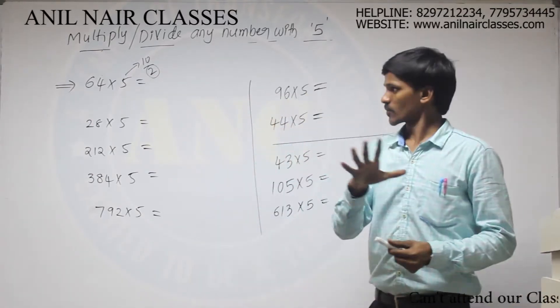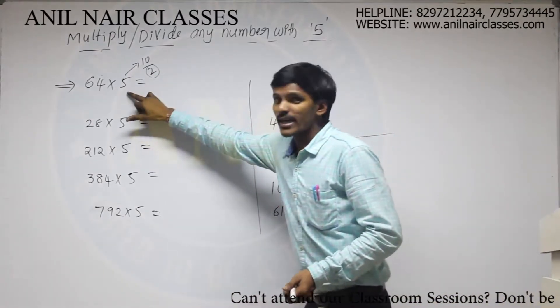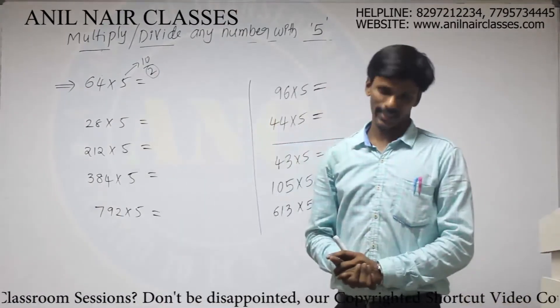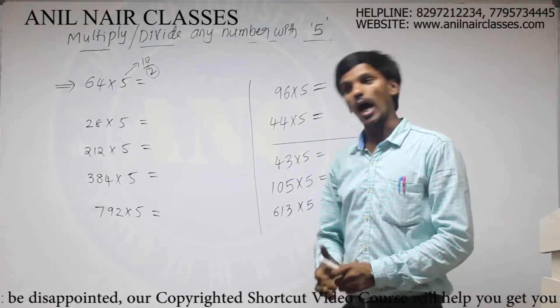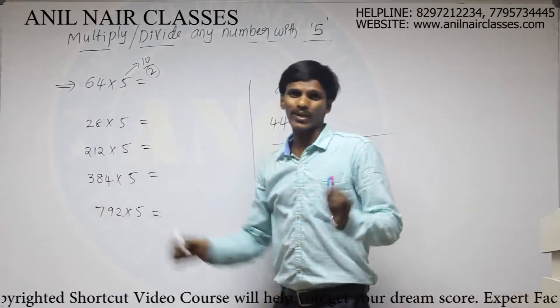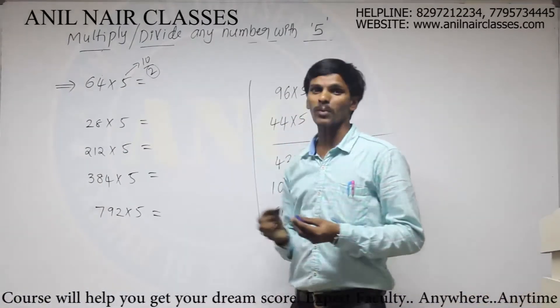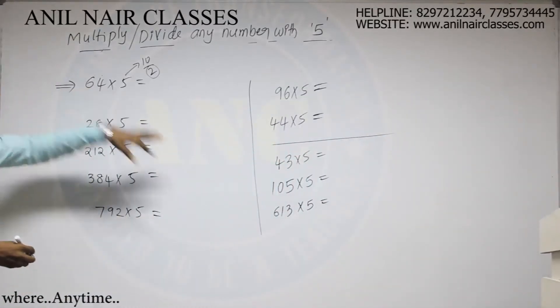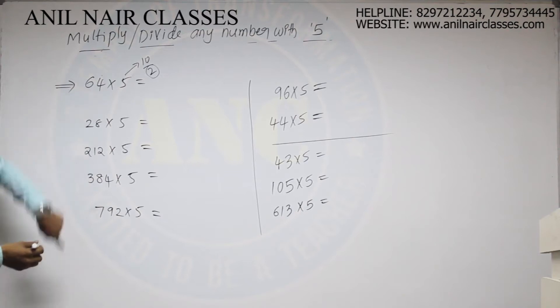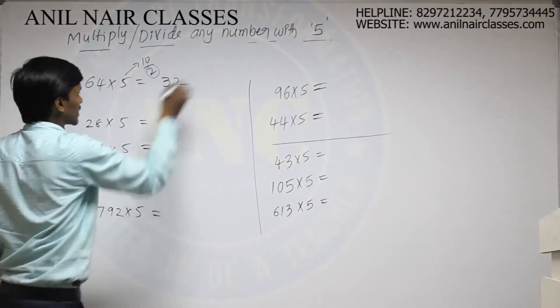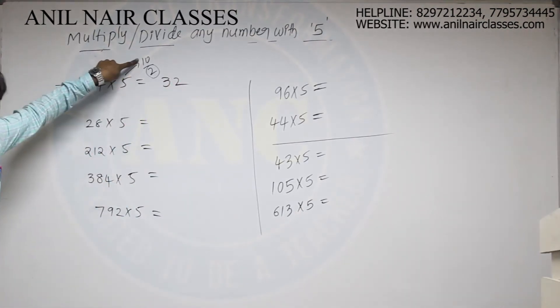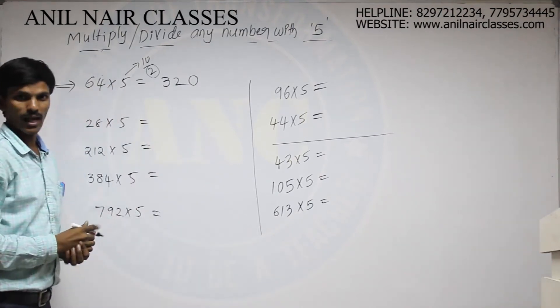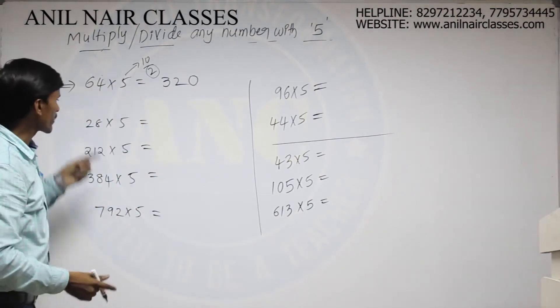Just assume, whether multiplication with 5 is difficult or division with 2 is difficult. Obviously, always division with 2 is very easy while comparing to multiplication with 5. So how to divide any given number with 2 now. Yes, 64 twos are 32. But 10 is there in the multiplication. So add additional 0 here.